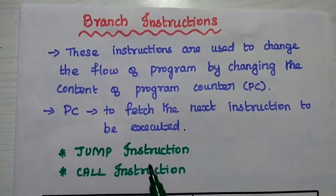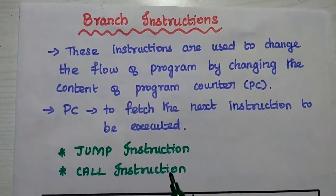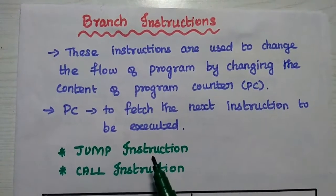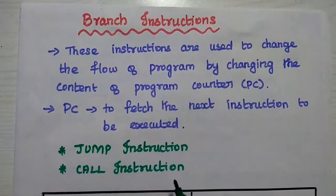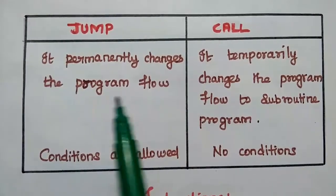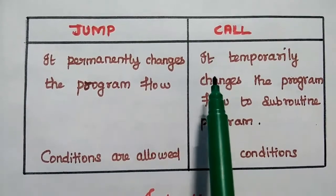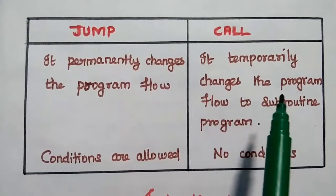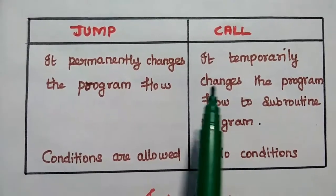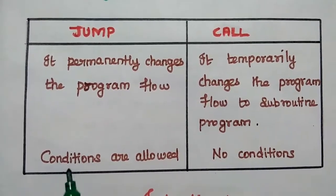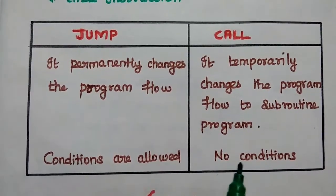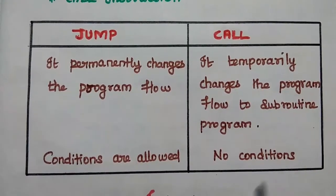There are two types of instructions in the branch instruction set. One is the jump instruction and the other is the call instruction. The jump instruction permanently changes the program flow, but the call instruction temporarily changes the program flow to a subroutine program and can return back to the main program. Conditions are allowed in jump instructions, but there are no conditions in the call instruction.